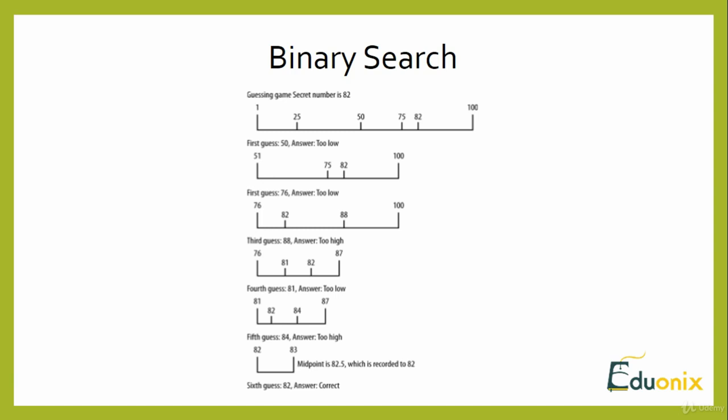If the midpoint element is greater than the data being searched, set the upper bound to midpoint minus one. Repeat these steps, otherwise return the midpoint as the found element with respect to binary search.